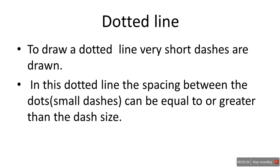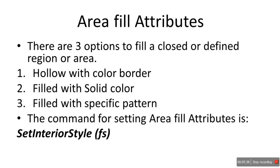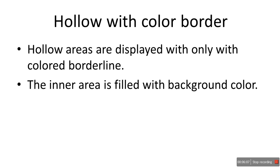For a dotted line, very short dashes are drawn. The spacing between the dots can be equal to or greater than the dash size. Now area fill attributes — there are three options to fill a closed area: first, hollow with color border; second, filled with solid color; third, filled with a specific pattern. The command is set interior style, providing the fill style FS in brackets.